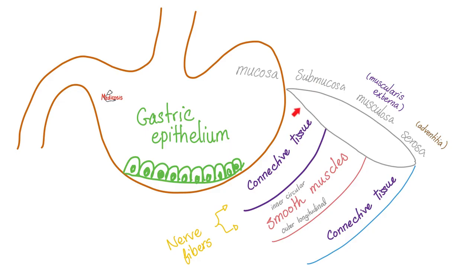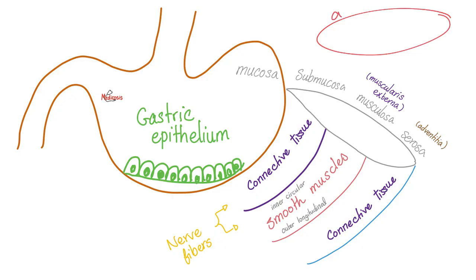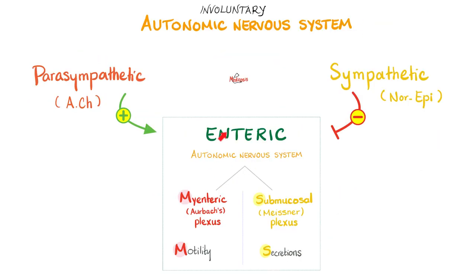After the mucosa, we have connective tissue in the submucosa, full of glands for secretion. Then we have the muscle layer we actually care about — the musculosa, also known as muscularis externa — arranged in two layers: inner circular and outer longitudinal. After this is the serosa or adventitia, another layer of connective tissue. When the gut is covered by peritoneum we call it serosa; when it's not, we call it adventitia. Serosa is a subset of adventitia.